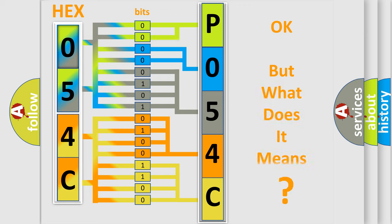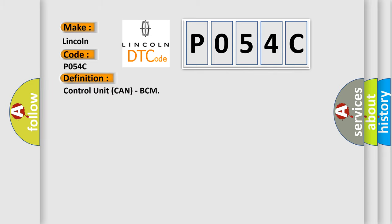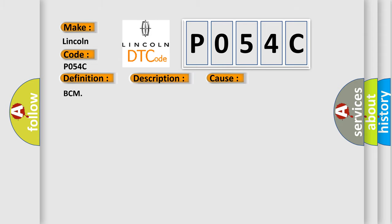We now know in what way the diagnostic tool translates the received information into a more comprehensible format. The number itself does not make sense to us if we cannot assign information about what it actually expresses. So, what does the diagnostic trouble code P054C interpret specifically? The basic definition is: Control unit CAN, BCM. When detecting an error during the initial diagnosis of the CAN controller of the BCM, this diagnostic error occurs most often in these cases: BCM.